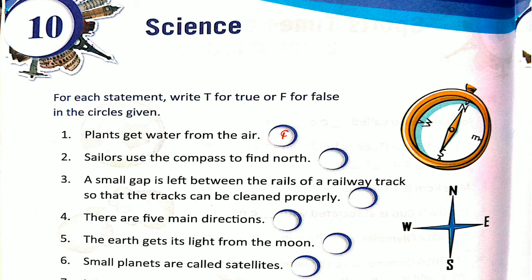Number 2: Sailors used the compass to find north. This is true — sailors used the compass to find north. Number 3: A small gap is left between the rails of the railway track so that the tracks can be cleaned properly. This is false.